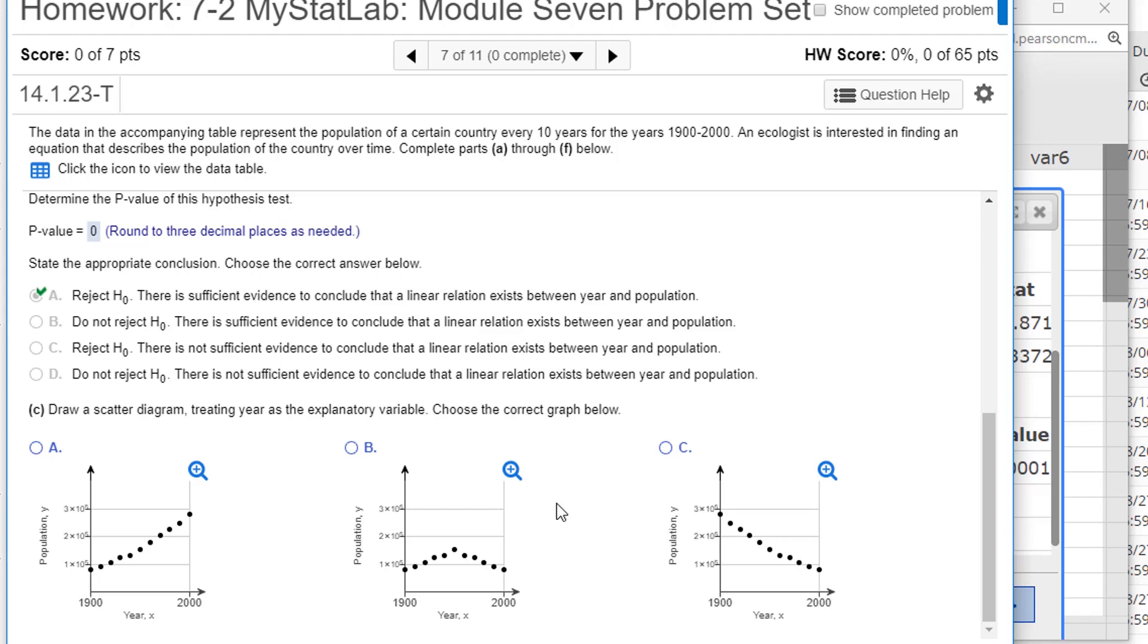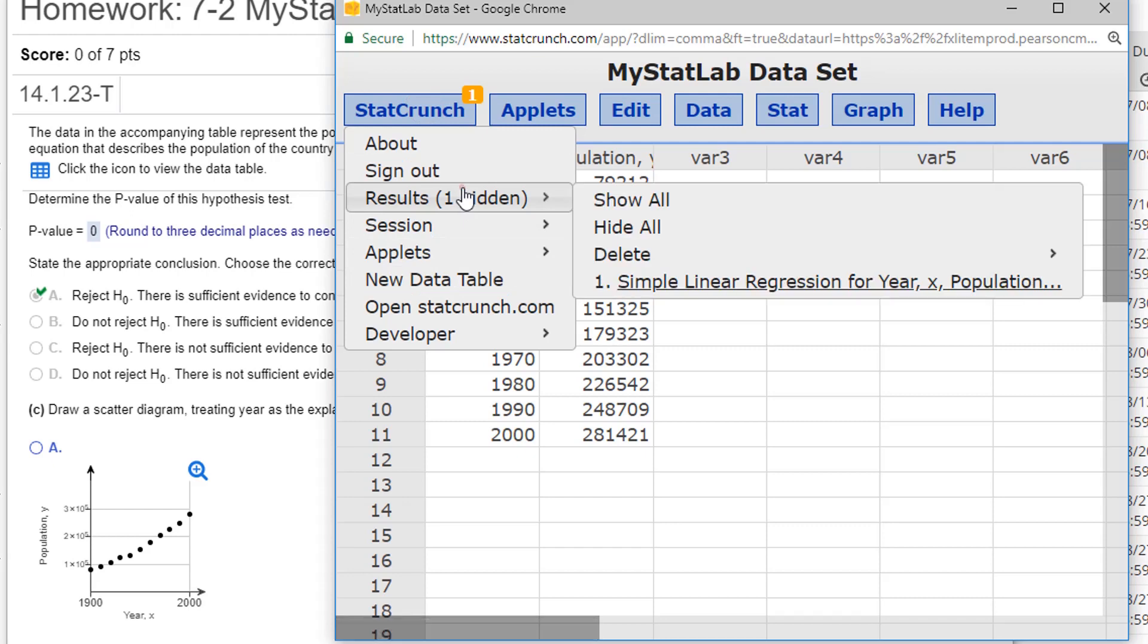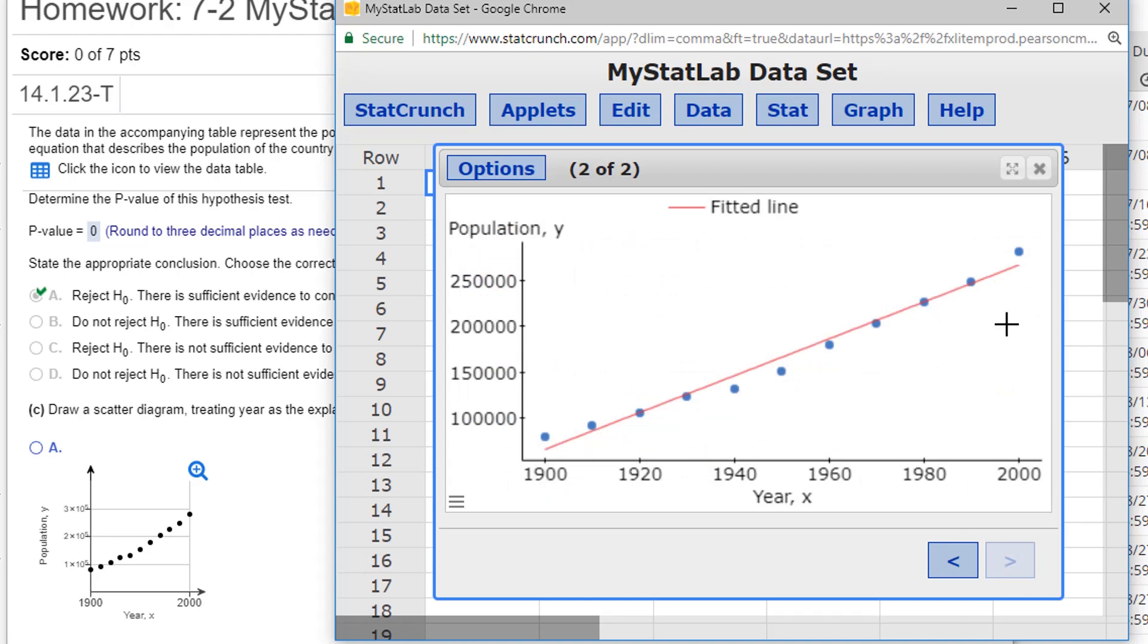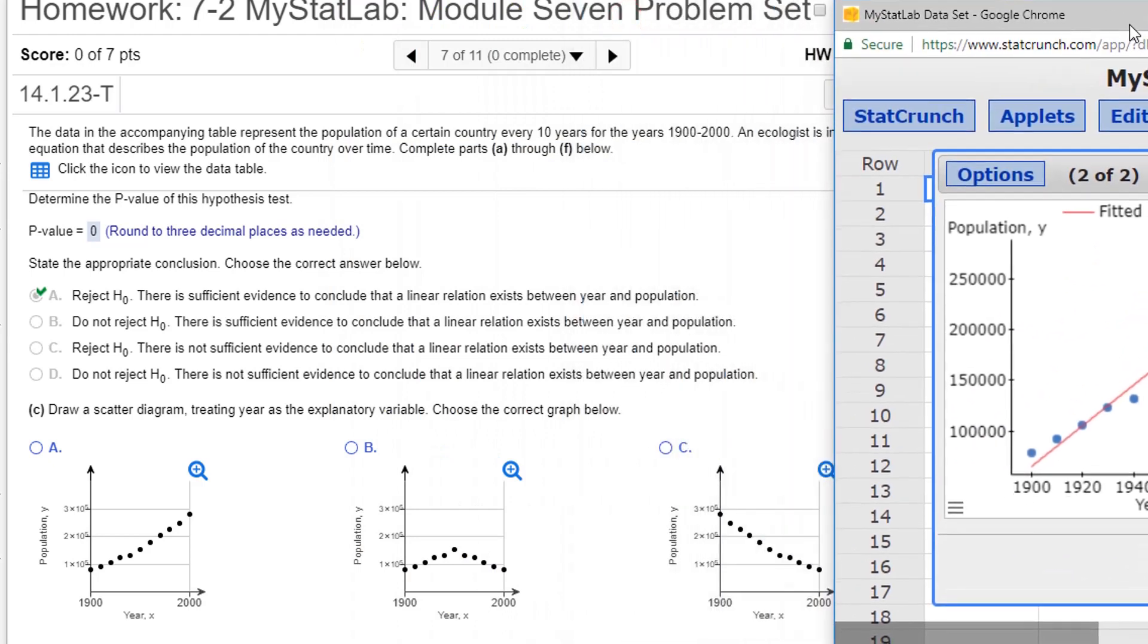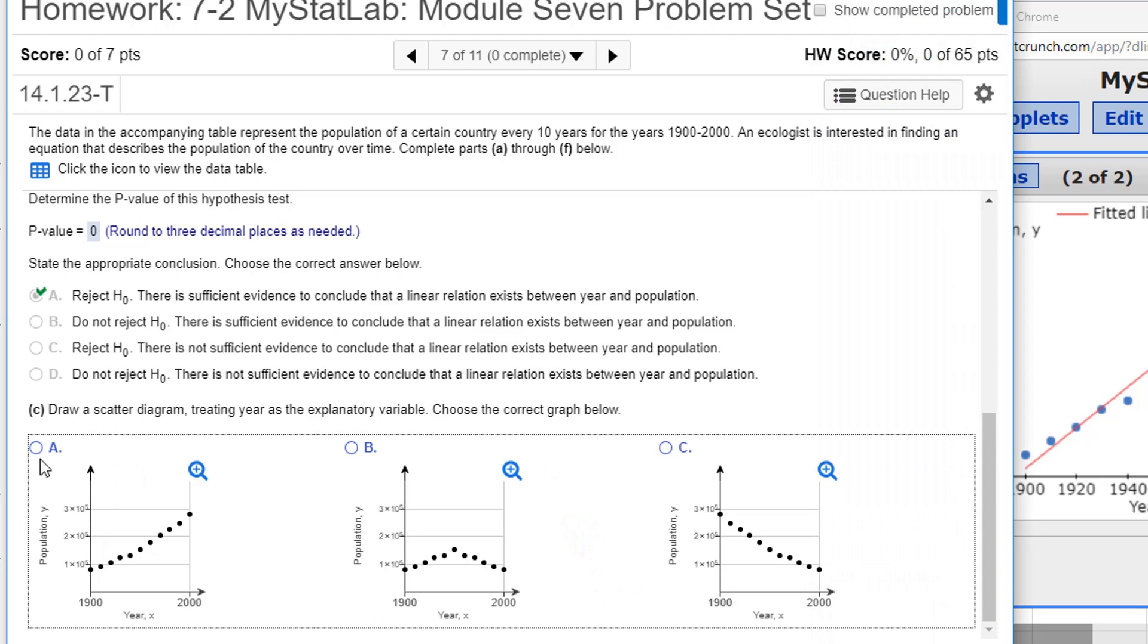Now we're asked to draw a scatter diagram treating year as explanatory. Let's go to StatCrunch and let's create the scatter plot. In fact, if we look at the simple linear regression, I think it creates it for you by default, it does. There's actually one of two pages. If we go to the second page, here's our scatter plot. It draws the scatter plot points and it draws the line of best fit. I'm going to make it square so it kind of matches the data, but clearly this is the same as option A. It's not any of the others. There's only three options and this one's increasing, that's the only one that it could possibly be.